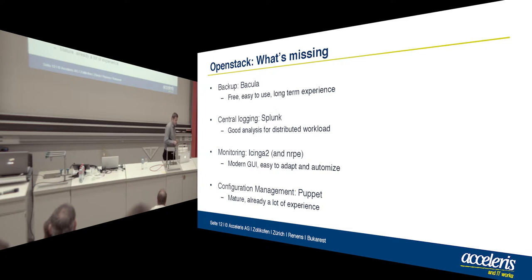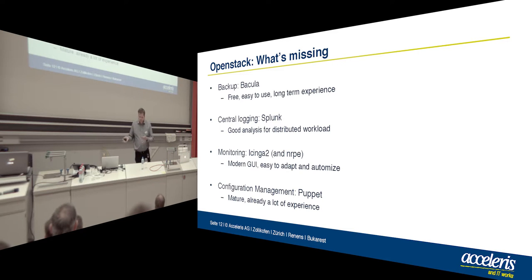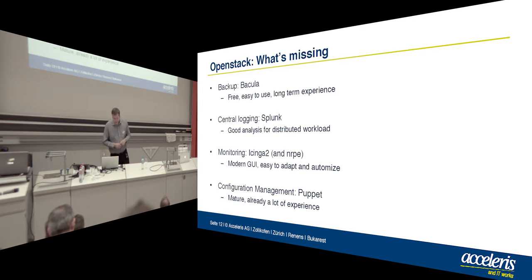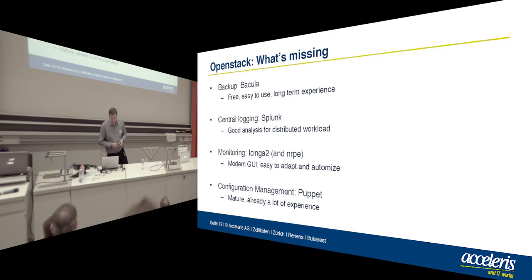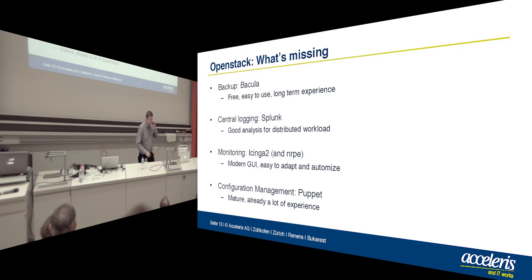OpenStack has a lot of modules and projects, but in the end there are still some functionalities missing. There is no really good backup solution implemented. Central logging — there are projects addressing these issues, but at the moment they are not really usable or don't have the same features. For monitoring we decided to go with Icinga, which is quite a cool tool. And the whole automation and configuration management is done by Puppet, which is a major tool we already used in a lot of projects — so that was also an easy decision.